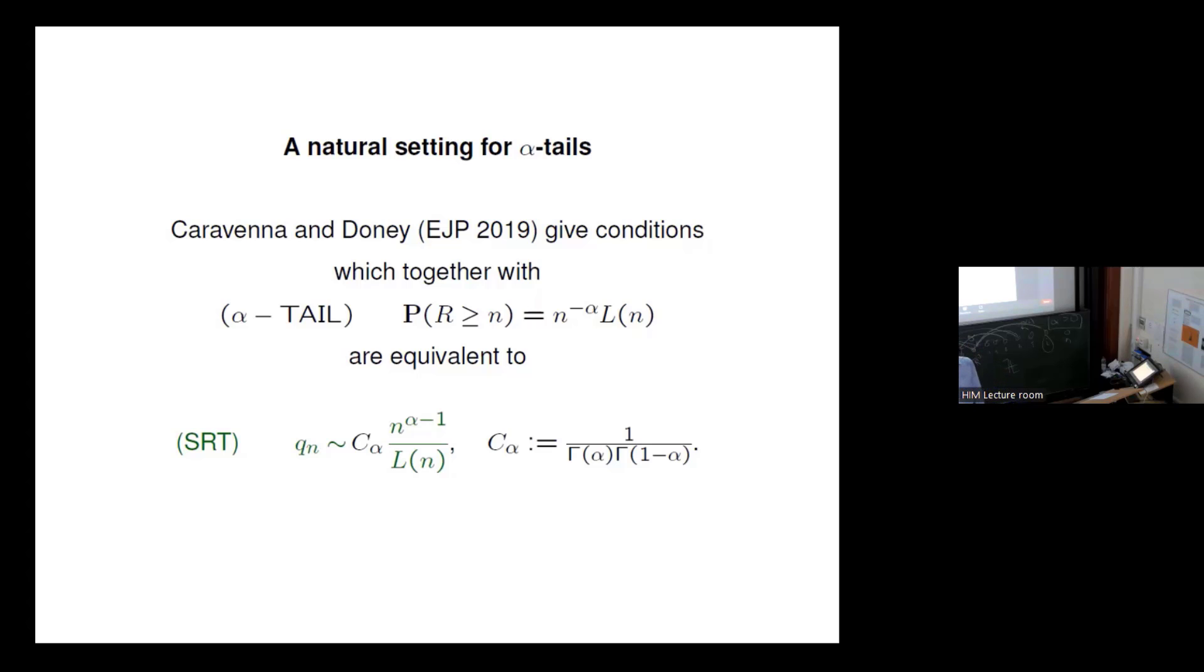Karawena and Dhoni in EJP gave conditions which, together with the condition alpha tail, which is always running, are equivalent to the nice behavior of the renewal function. If the renewal function is nicely behaved, also has a nice tail, then the things become much nicer.